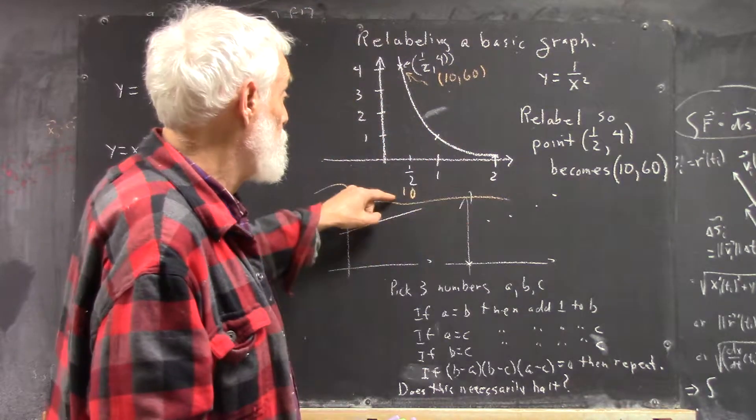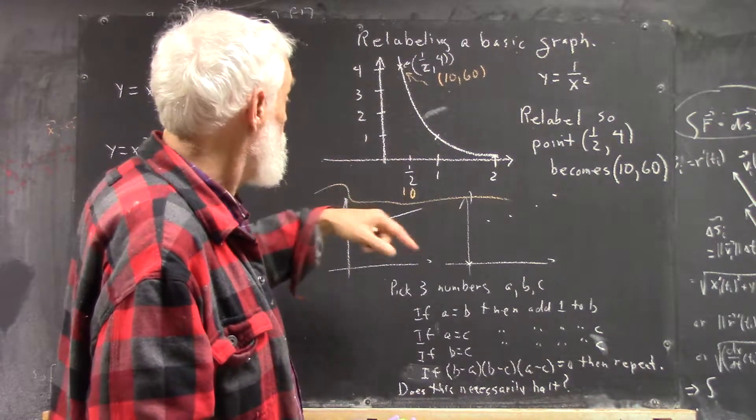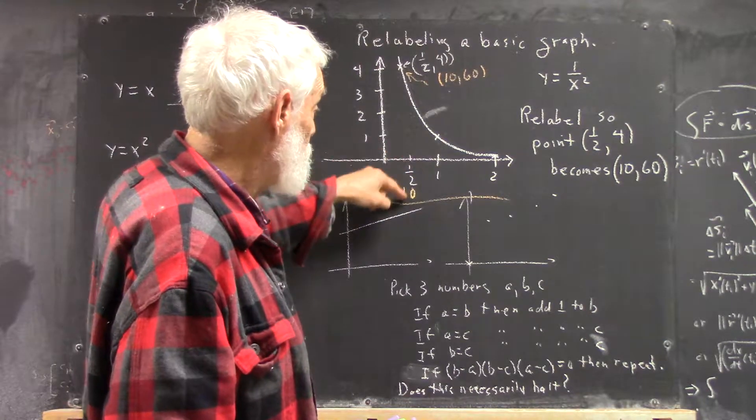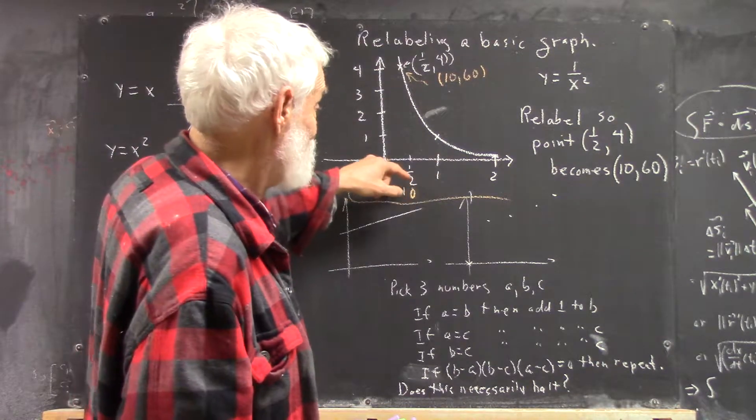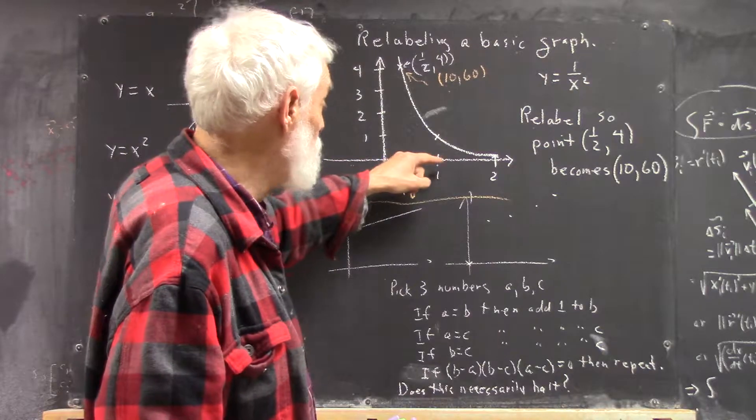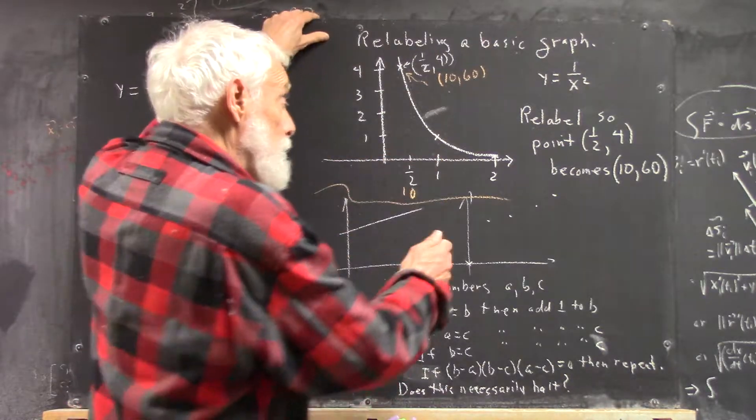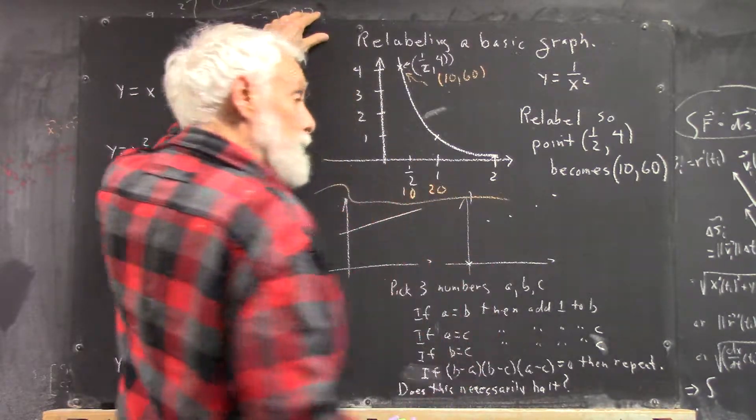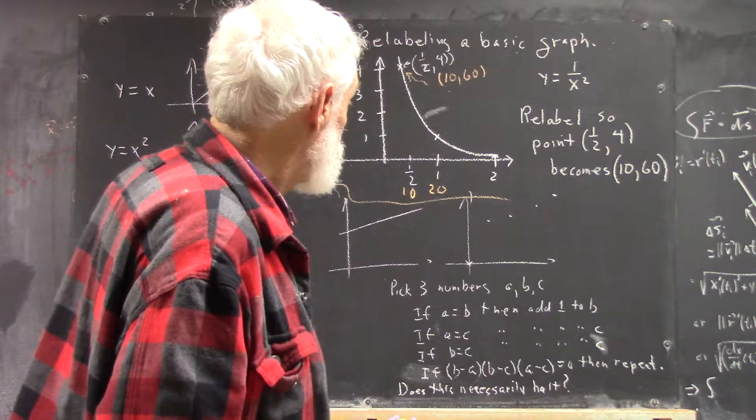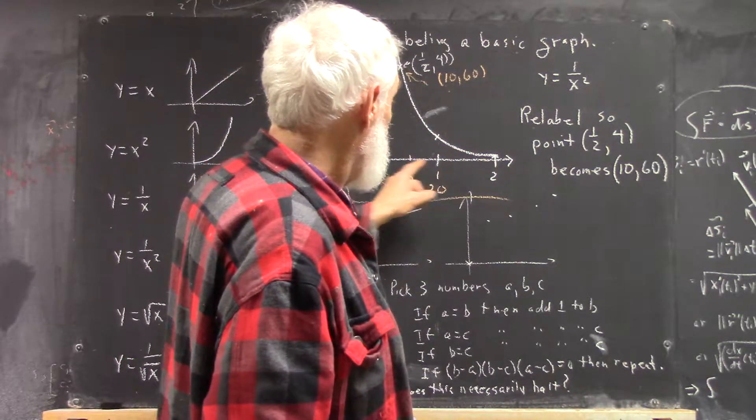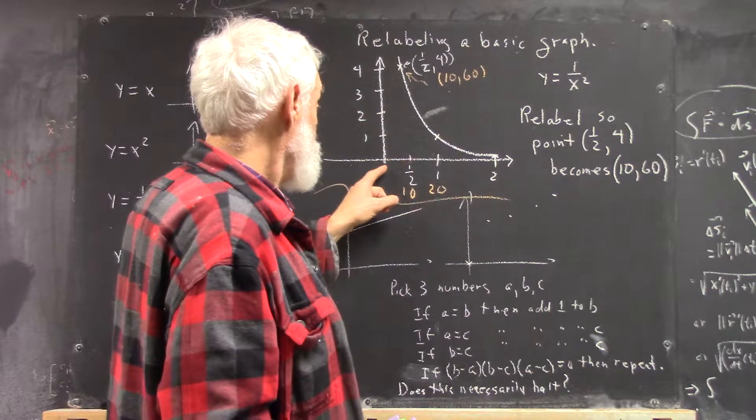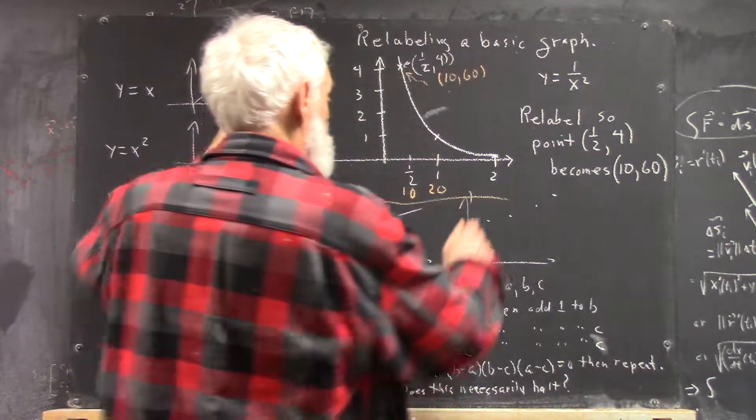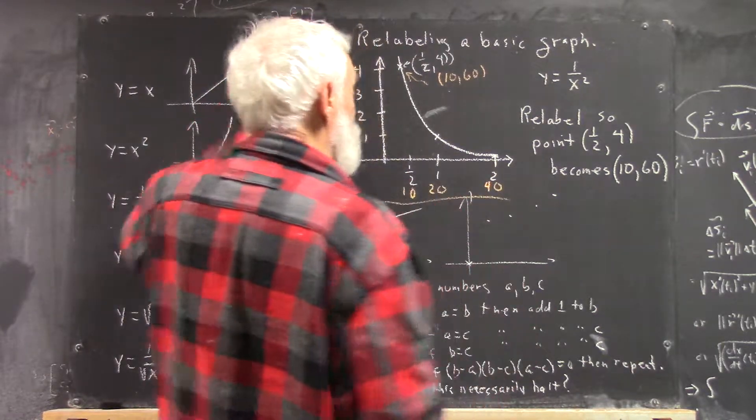So now the x-axis has two labels for this point. Well, if this is 10, what's this point? This point is half as far from 0 as this one is, so this one had better be twice as far from 0, which means this point should be 20. And then, of course, 1 unit is now 20. So from 0 to 1 is 20, so from 1 to 2 has to be another 20, which means that now we have 40 here.